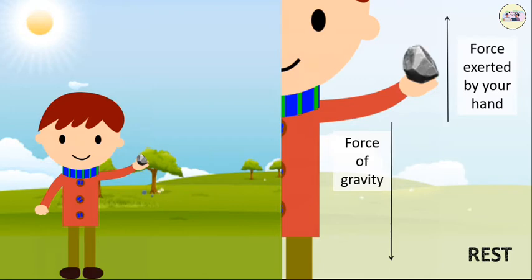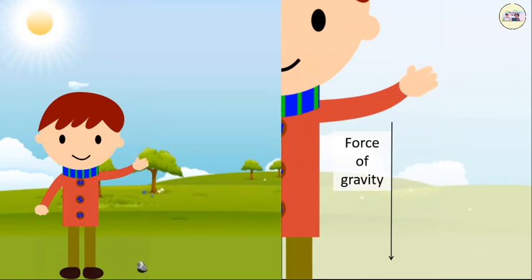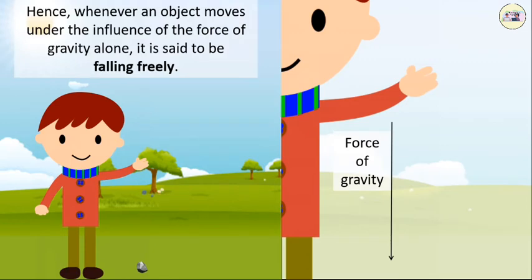Now release the stone from your hand. The only force that acts on it is the gravitational force of the earth, and the stone falls down under its influence. Hence, whenever an object moves under the influence of the force of gravity alone, it is said to be falling freely.